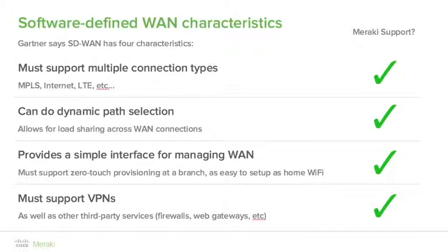Secondly, SD-WAN needs to offer dynamic path selection — the appliance must be able to identify multiple paths and offer intelligence in routing to the destination without manual intervention. Third, a simple interface for managing the WAN; if the interface is not simple, we might as well go back to hand-configuring MPLS PE routers via the CLI. And fourth, it must support VPNs to stitch together all these features securely and advertise local networks to remote sites.